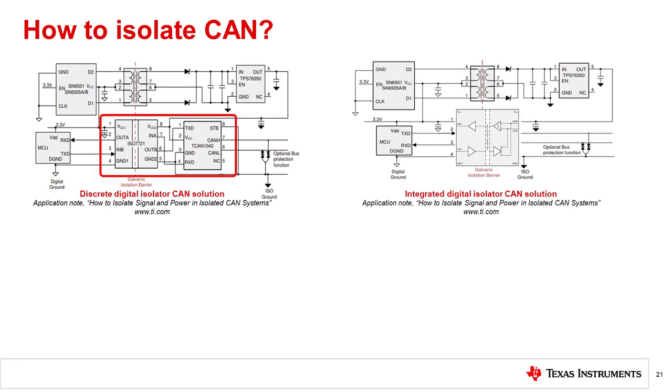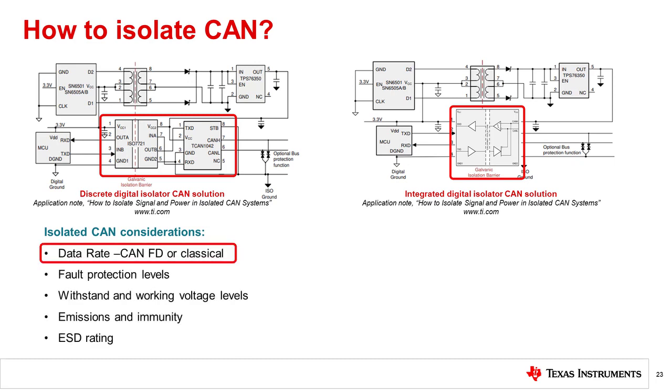Integrated solutions combine the CAN transceiver and digital isolator into a single package. The key design considerations to evaluate when selecting and isolating a CAN transceiver are data rate. CAN-FD replaces classical CAN to allow for faster communication in long and heavily loaded networks.